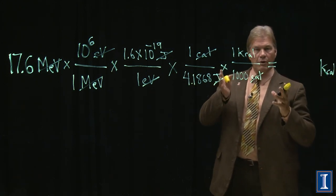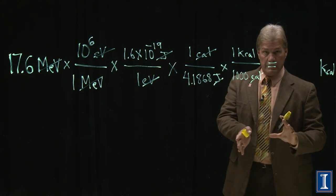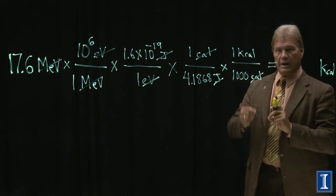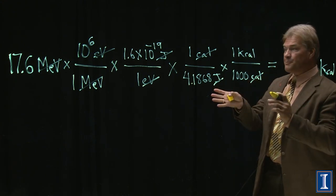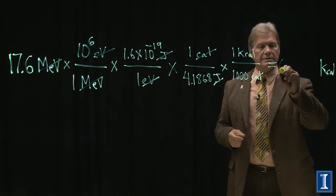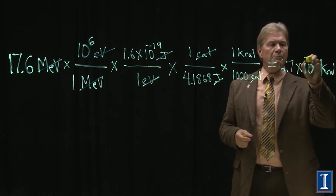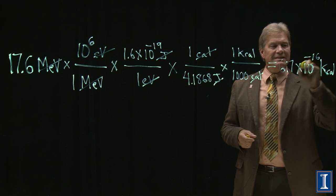The amount of energy that we're going to get, in the same units now, from doing that one nuclear reaction. So, we can multiply these numbers, and we're going to get 6.67 times 10 to the minus 16 kilocalories.